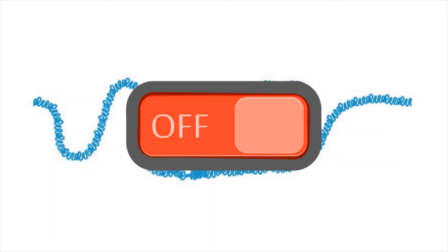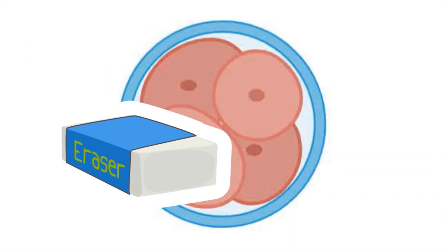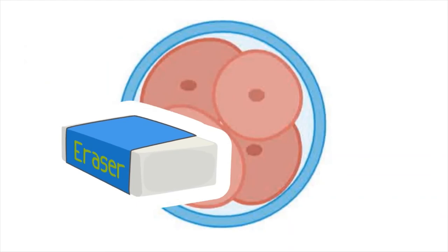These marks are maintained in all the cells of an organism throughout its lifetime. The only time the marks are reset is in the germ cells of the next generation. Male and female germ cells get different marks because they play different roles in embryo development.